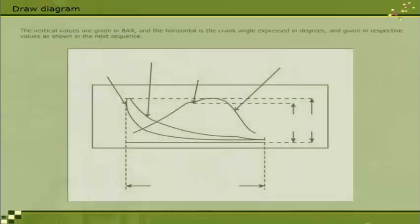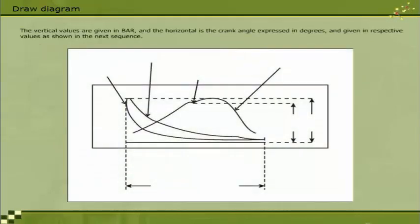The vertical values are given in bar, and the horizontal is the crank angle expressed in degrees, and given in respective values as shown in the next sequence.